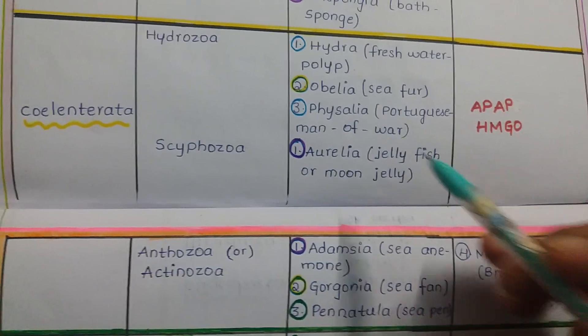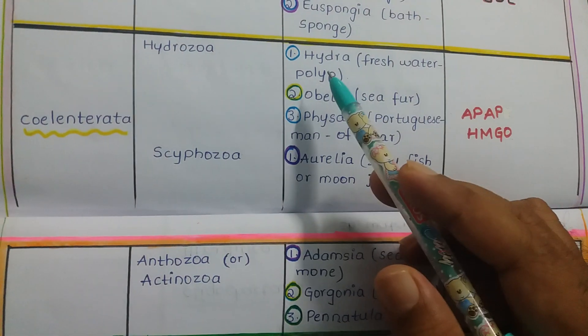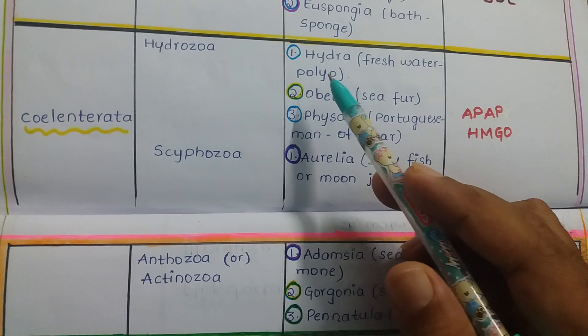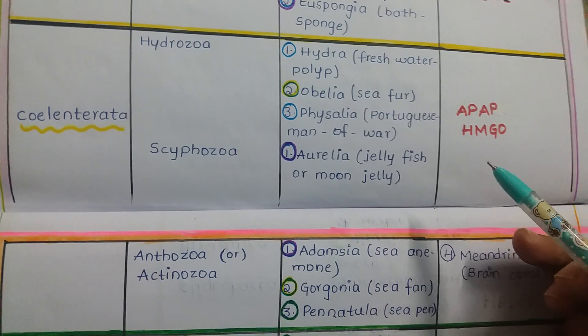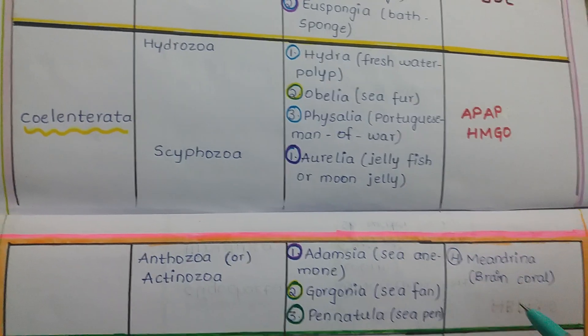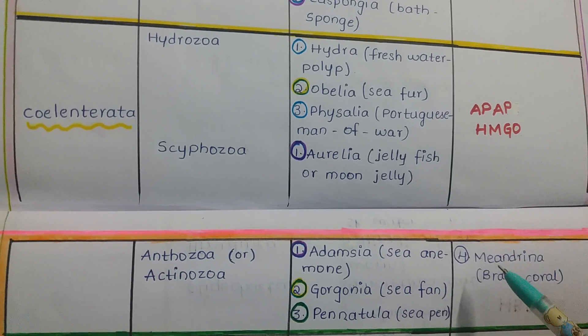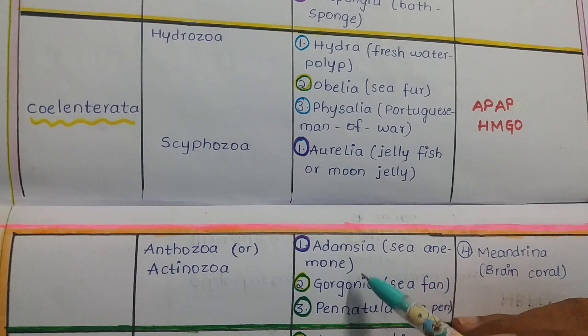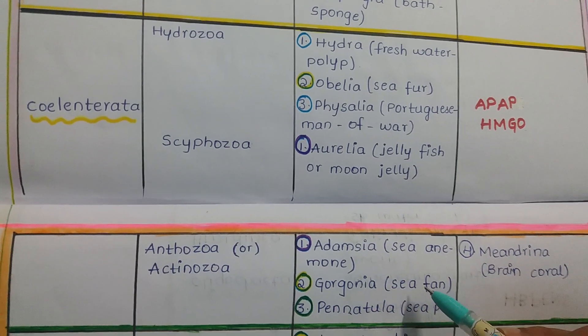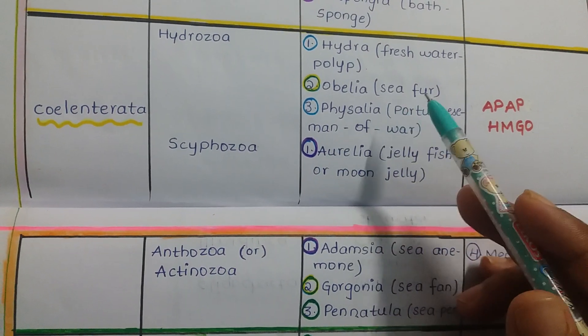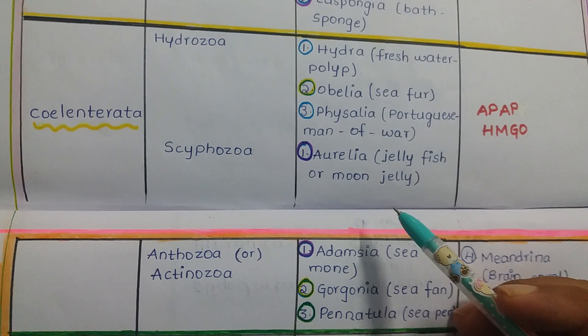HMGO: H for Hydra (freshwater polyp), M for Meandrina (brain coral) — remember, to solve mean problems you have to apply your brain. G for Gorgonia (sea fan) — you are using a fan whose brand name is Gorgonia. O for Obelia, whose common name is sea fan.